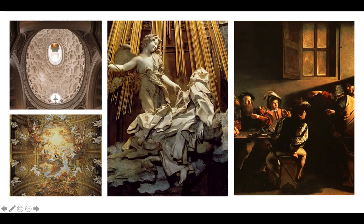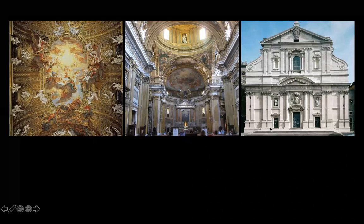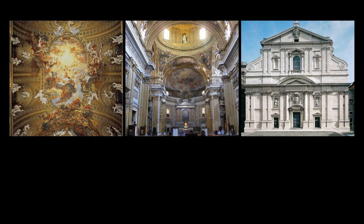Now we move on to Il Gesù. The artist is Gaulli and he's painting the ceiling fresco here. The name of the painting is Triumph of the Name of Jesus. This is fresco and stucco — it's actually sculpted on there as well — in the nave of the vault, 1676. The facade returns to the straight lines of the Renaissance. The ceiling fresco unifies painting, stucco sculpture, and architecture.